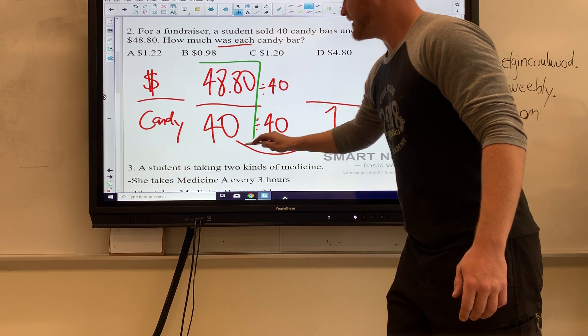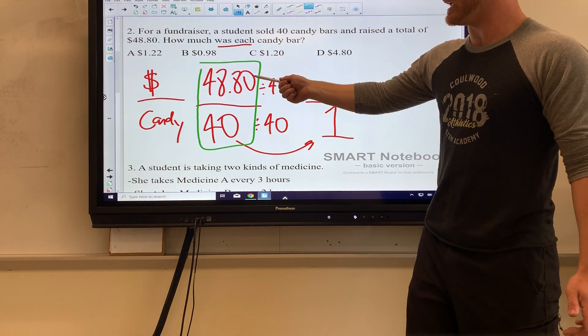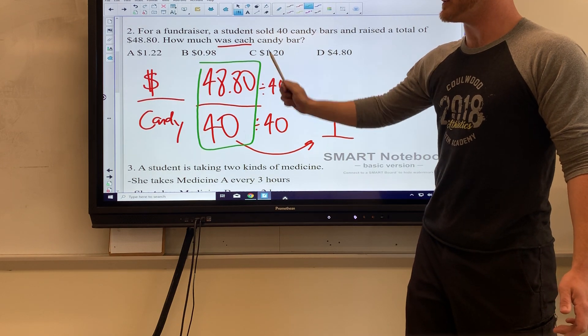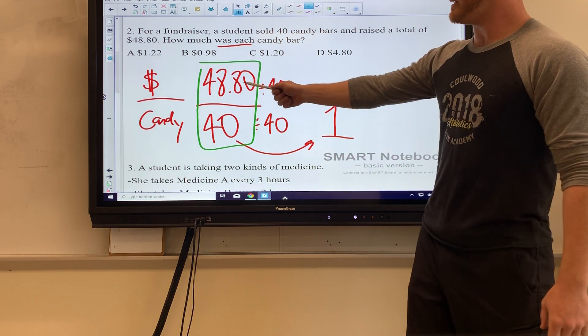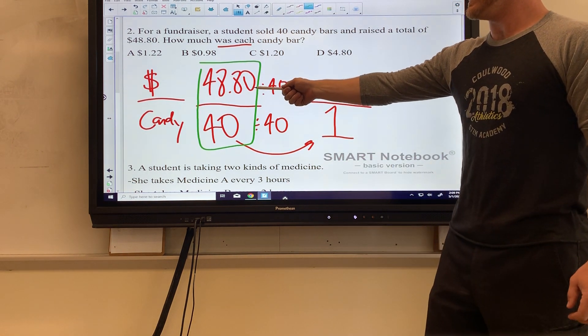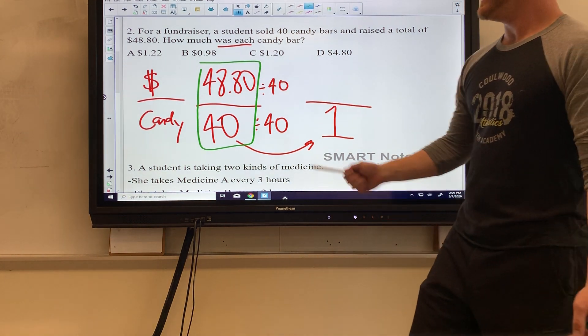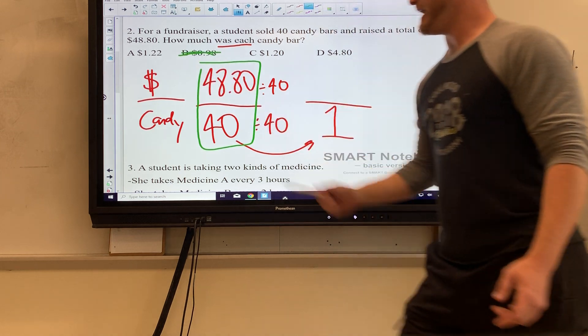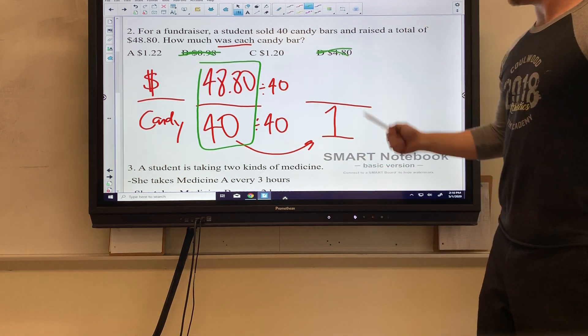Now off the get-go, looking at this rate right here, if this numerator was 40—if it was 40 dollars for 40 candy bars—that means each candy bar would be a dollar. But since this is a little more than 40, that means the answer is each candy bar's going to be a little more than a dollar apiece. So off the bat I know it can't be B, and honestly D is probably going to be too much anyway.